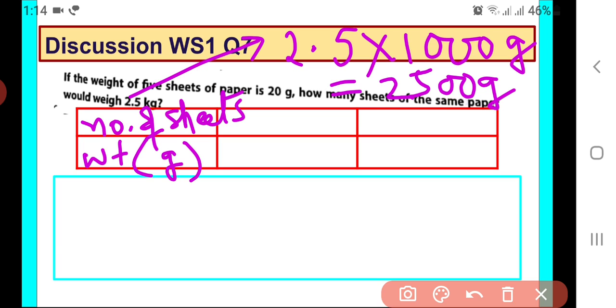Okay, so number of sheets is given to be 5 and the weight is 20 grams and we need to see how many sheets. So we assume that there are x number of sheets which will weigh 2500 grams.